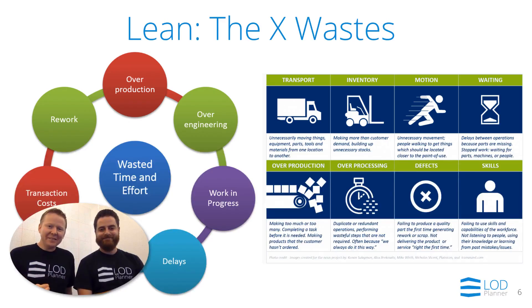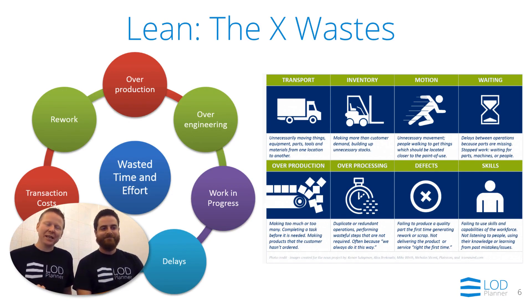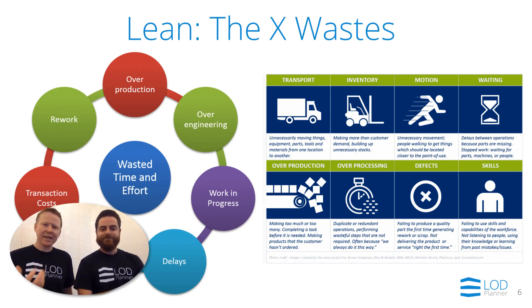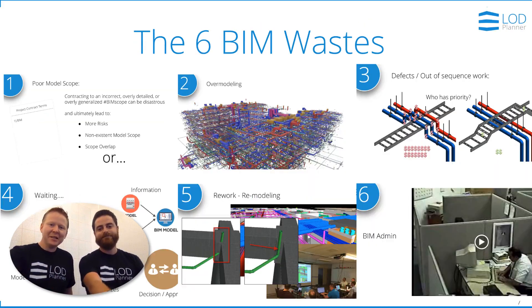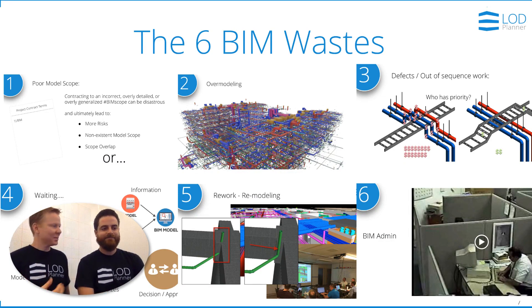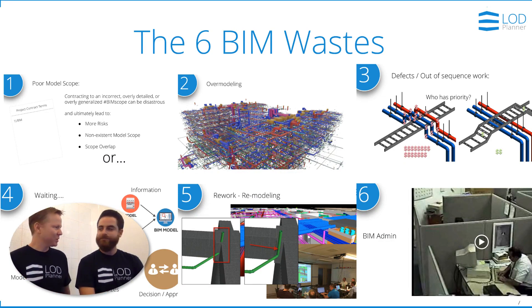In lean, in production and manufacturing and also in construction, there are seven wastes — the eight wastes. When it comes to BIM, we looked at defining wastes, and here we've got the six wastes of BIM that we'll take you through.